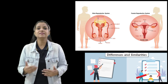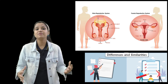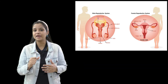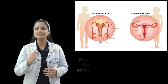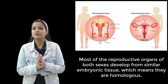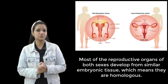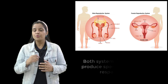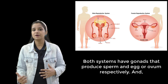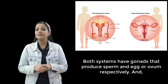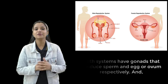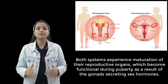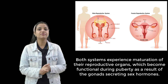In fact, along with the specialized differences, the reproductive systems of the male and female have some basic similarities. The first is that most of the reproductive organs of both sexes develop from similar embryonic tissue, which means they are homologous. The second important point is that both systems have gonads that produce sperm in the case of the male and egg or ovum in the case of the female. The third important point is that both systems experience maturation of their reproductive organs, which become functional during puberty as a result of the gonads secreting sex hormones.